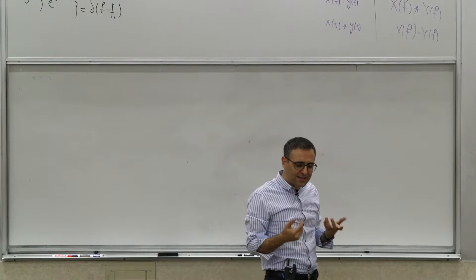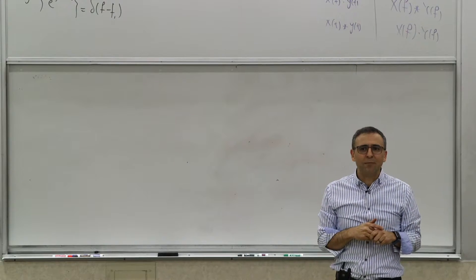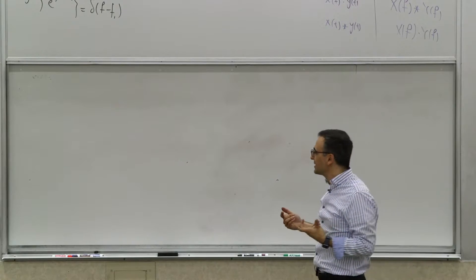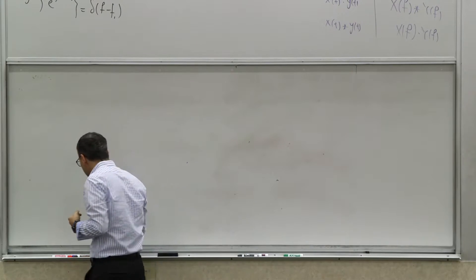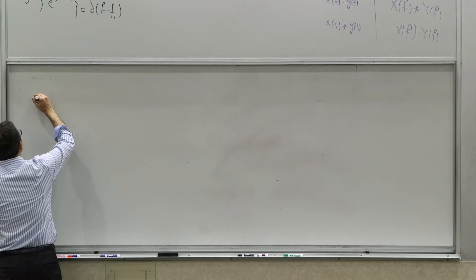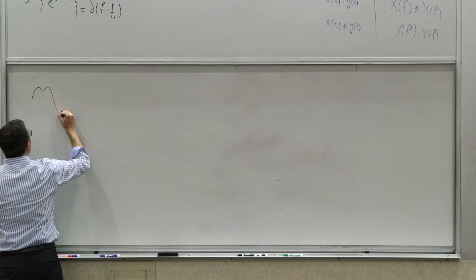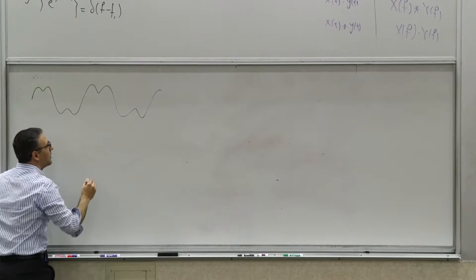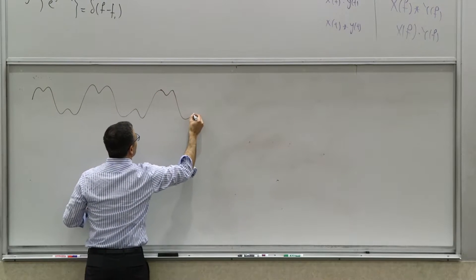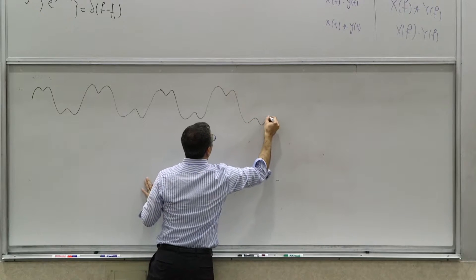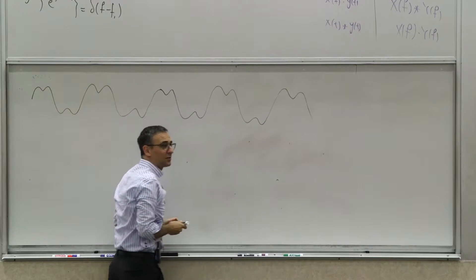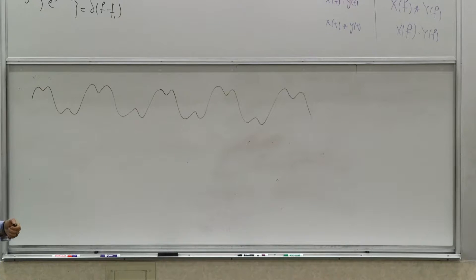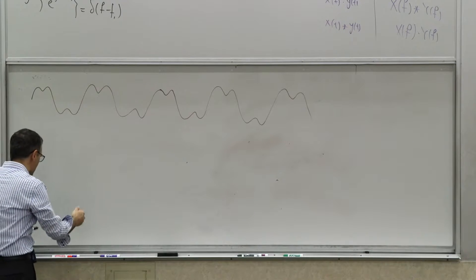Now, there are things called sampling oscilloscopes. What they do is something like this. Let's say you have a periodic waveform that you're trying to sample — a pretty high frequency signal. A typical oscilloscope cannot measure this; let's say it's a 50 or 30 gigahertz signal.